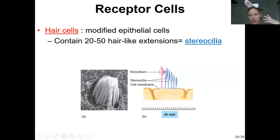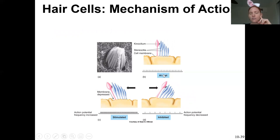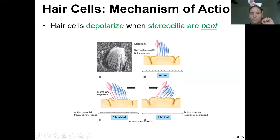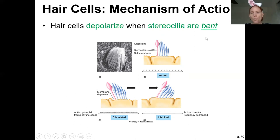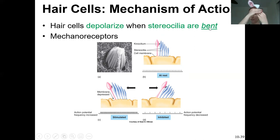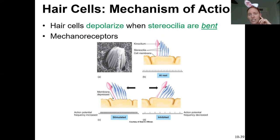Stereocilia are different from cilia — they do not move, they don't create currents or sweep anything. They are simply little extensions of the plasma membrane. When the stereocilia of the hair cells are bent, that is what depolarizes or activates the cell to create electrical signals. Because bending is a change in shape, this makes hair cells mechanoreceptors — a physical change in shape activates the cell.